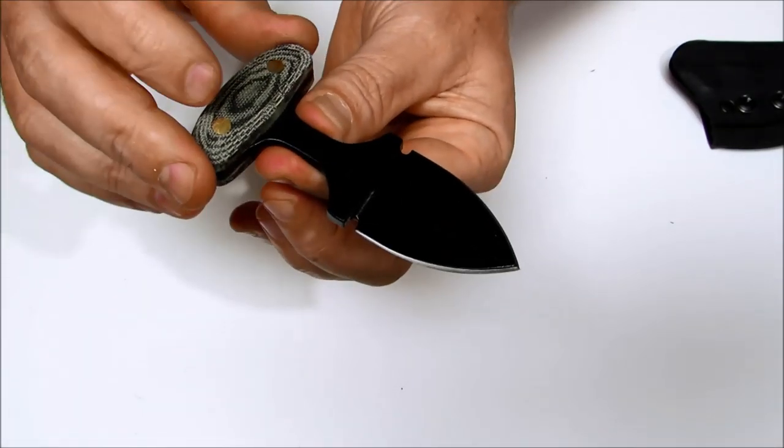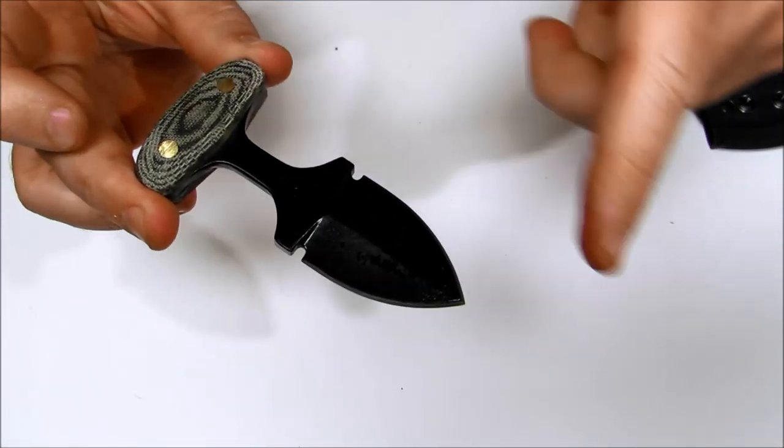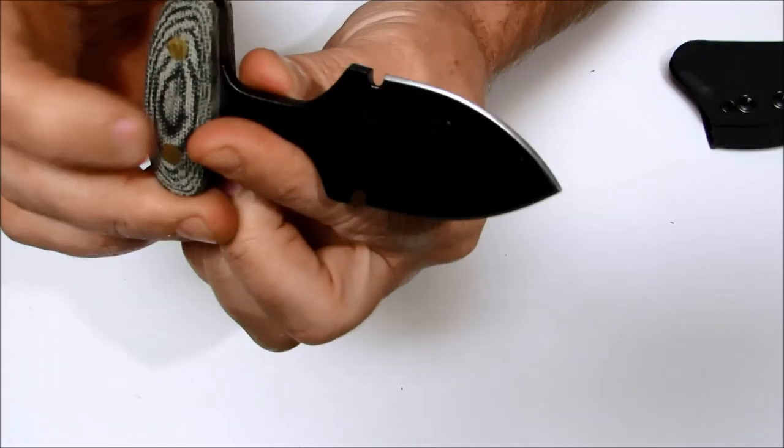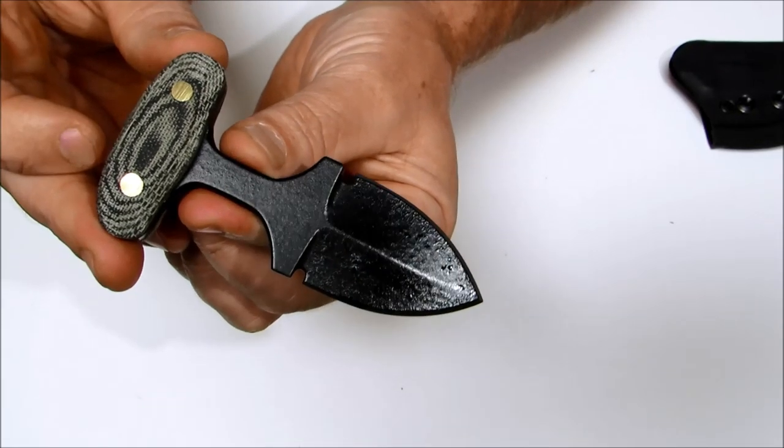It's got the T handle on there, very comfortable. Overall this compact piece measures in at four inches. It's got a two-inch blade with a 1.75 inch long cutting edge.